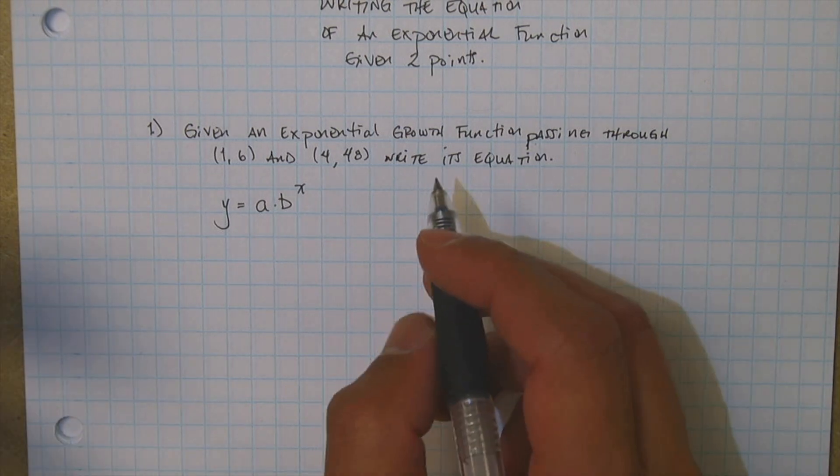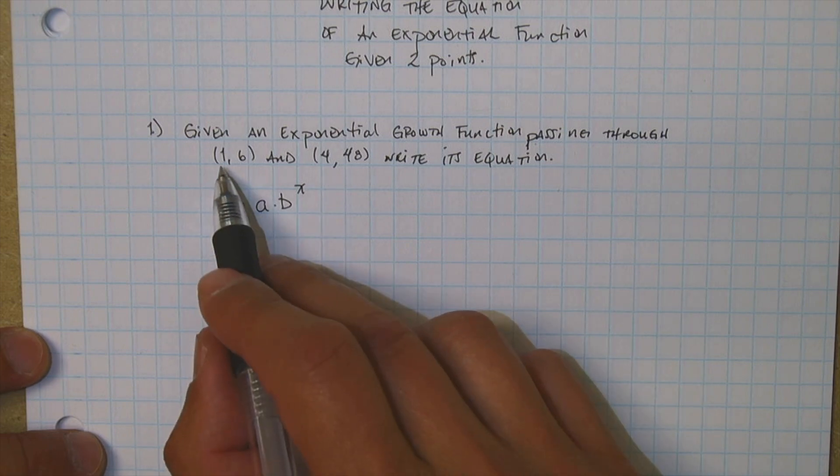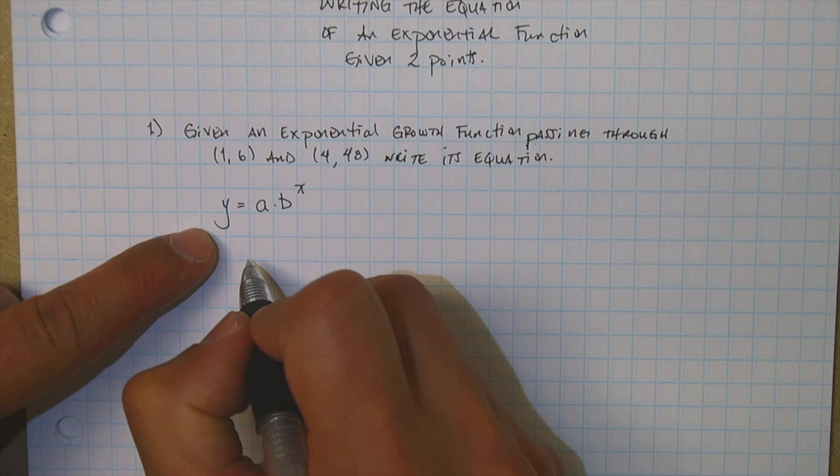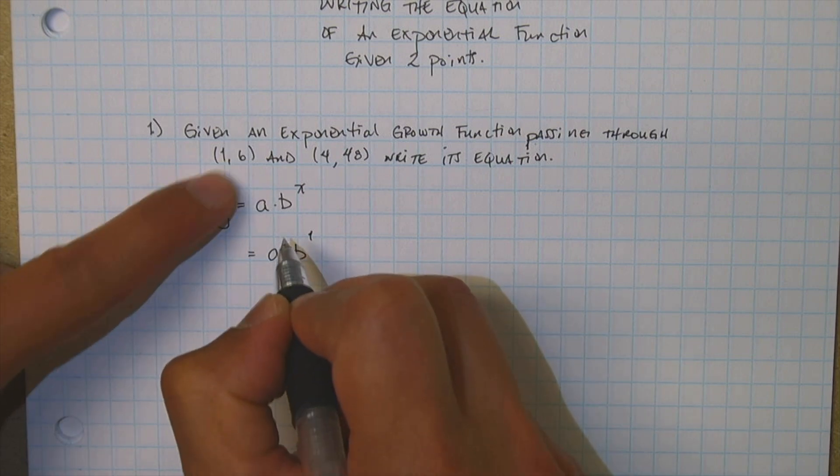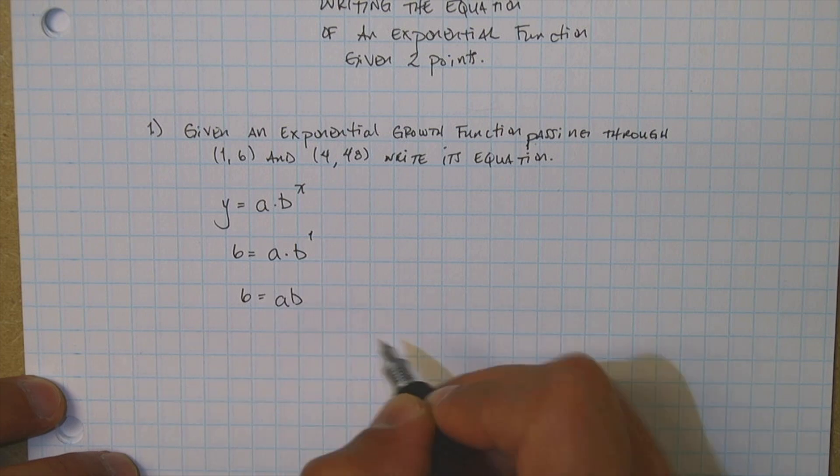So what we're going to do is set up a system and solve for one of the variables. So you notice this is x and y. So what you can do is go ahead and input it here. So we're going to have a times b. Now x is 1 and y is 6 right here. That's going to give us 6 is equal to ab.